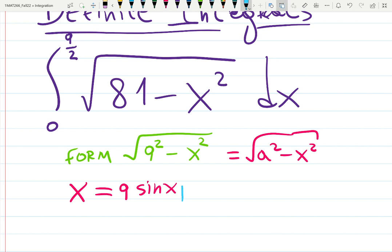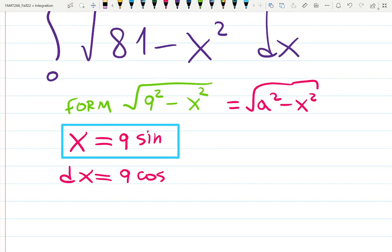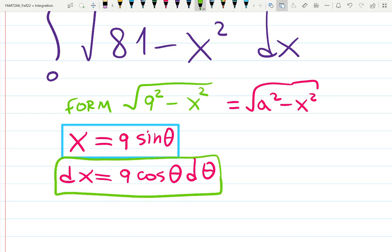This is the most important: if you know what substitution to use, everything follows from here. dx is 9 cosine theta dθ. Put it in the box as well, that's the most important.